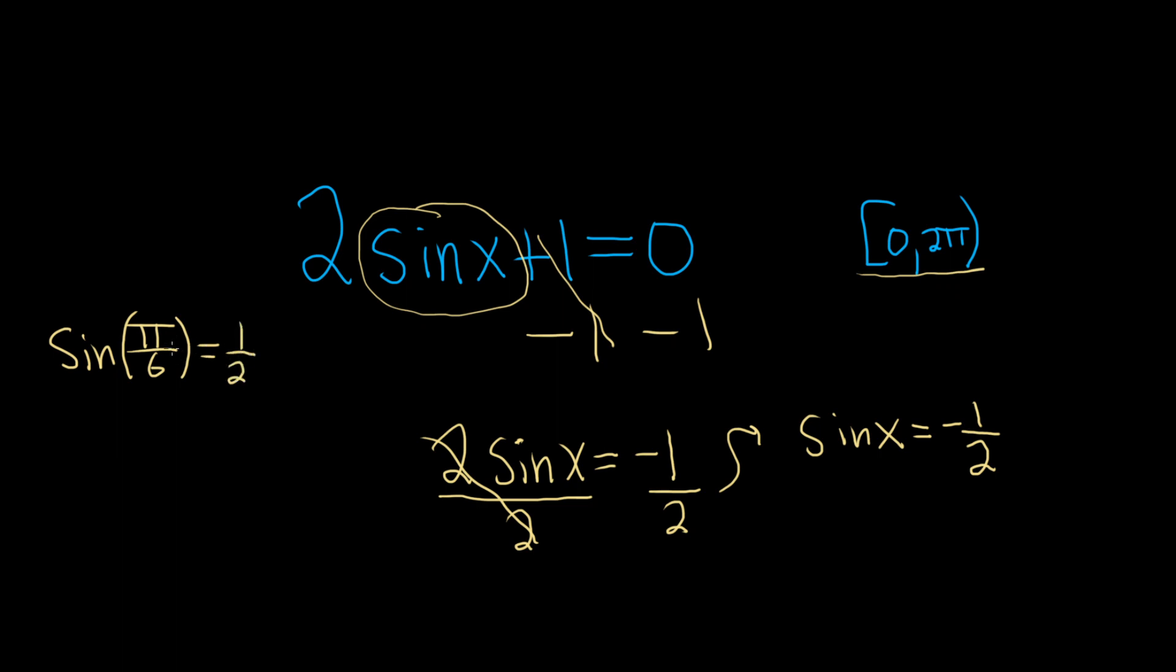So the sine of any angle that has a reference angle of π/6 is going to be 1 half, or negative 1 half. Now we have to think about the unit circle, and think about all of the other angles that have a reference angle of π/6 that will give us a negative.